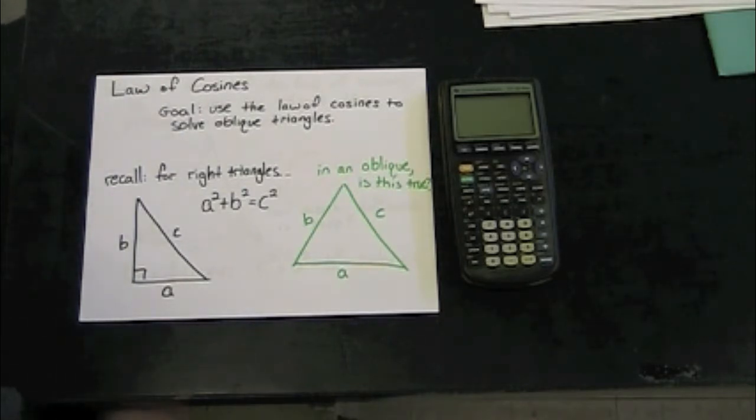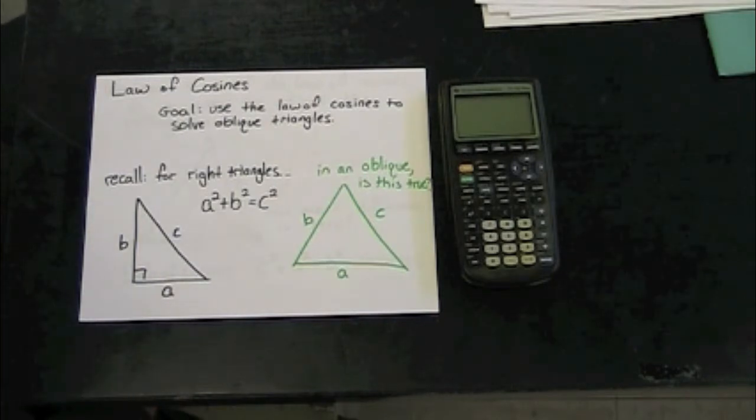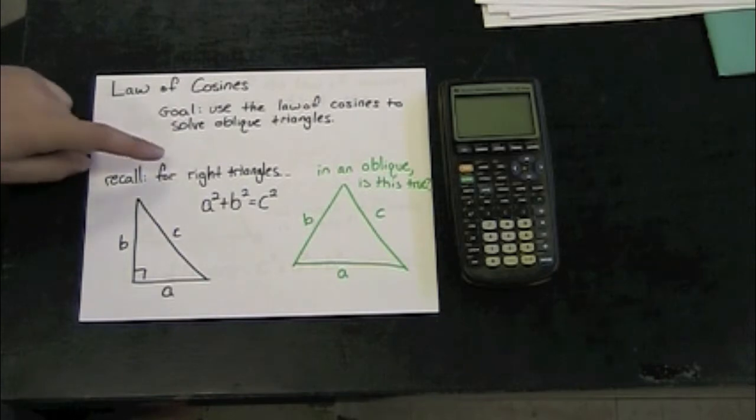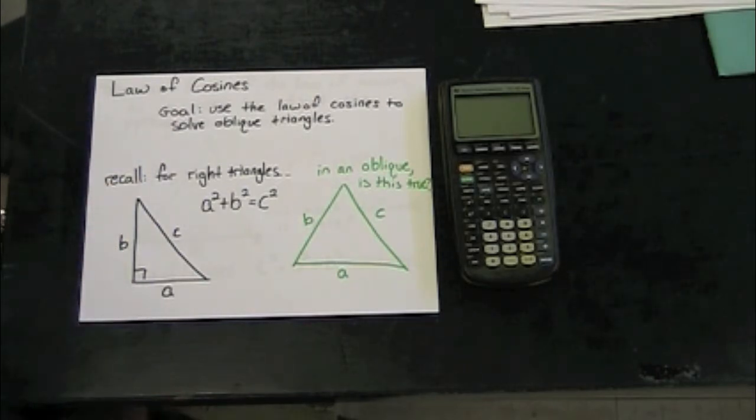Today we're going to look at the law of cosines. Our goal is to use the law of cosines to solve for the different parts of an oblique triangle. Please recall that an oblique triangle is any triangle that's not a right triangle. And also that for all right triangles, the sum of the squares of the legs is equal to the square of the hypotenuse. We tend to say this is a² + b² = c², and we know this as the Pythagorean theorem.